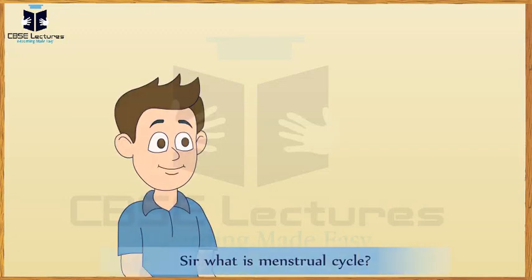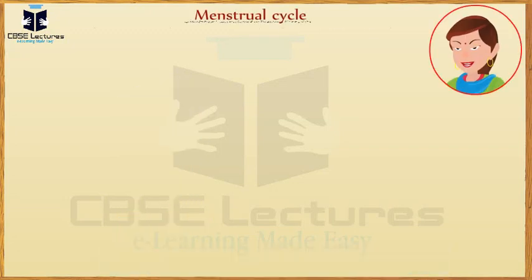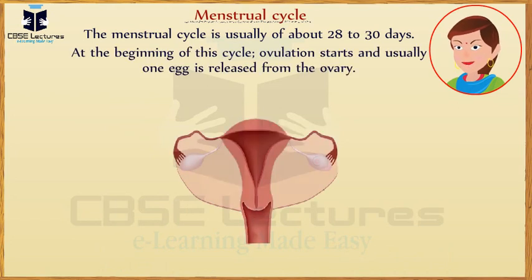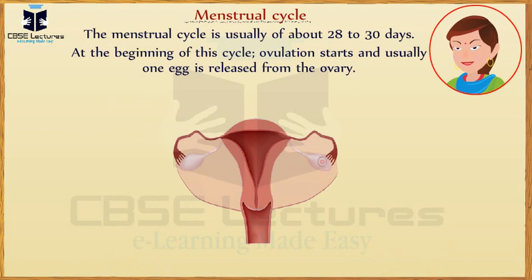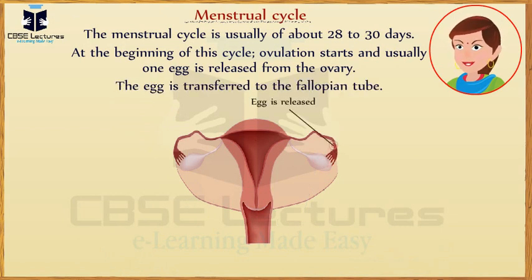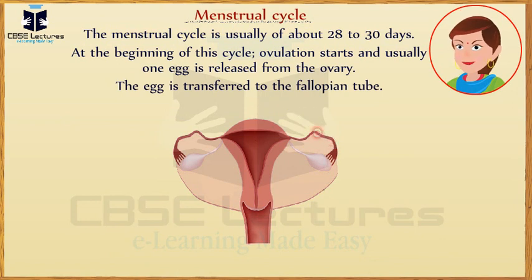What is the menstrual cycle? The menstrual cycle is usually about 28 to 30 days. At the beginning of this cycle, ovulation starts and usually one egg is released from the ovary. The egg is then transferred to the fallopian tube.